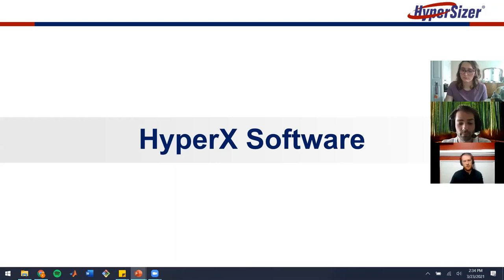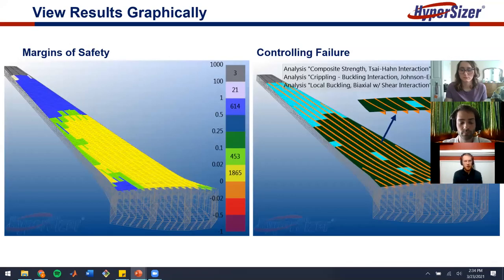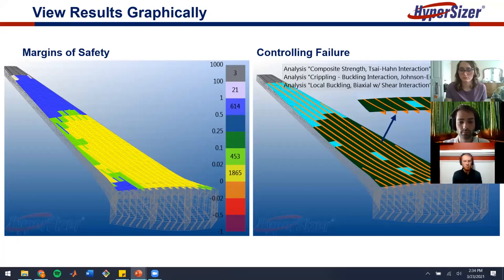Now we're going to talk a little bit about how the HyperX software works. Hypersizer takes the analysis of both the stress and applied strain to a particular structure, and then performs an optimization based on the material of your choice to determine the best way to lay up a composite structure or how to best design the metal structure. After the analysis, the program is able to generate margins of safety throughout the structure, which lets you know areas where it's very strong.